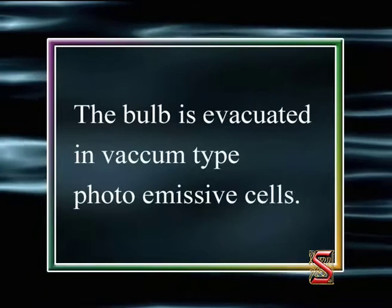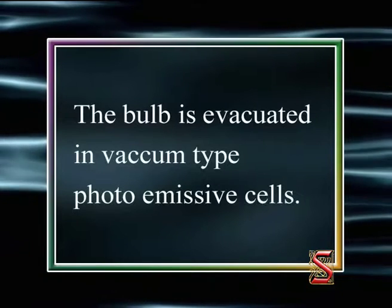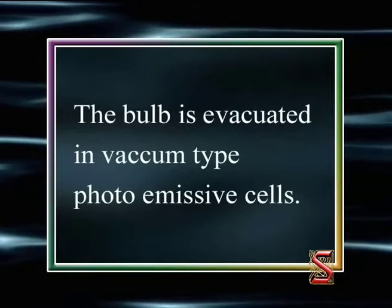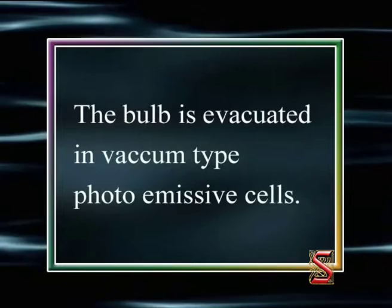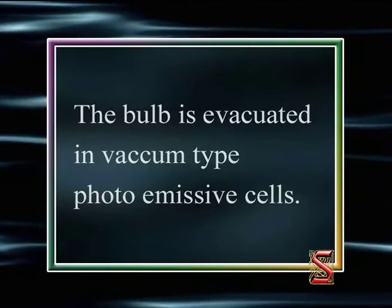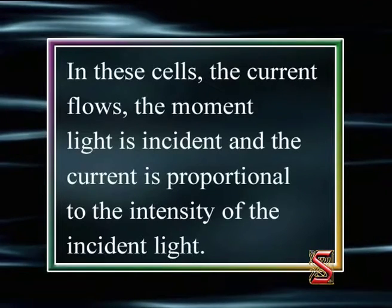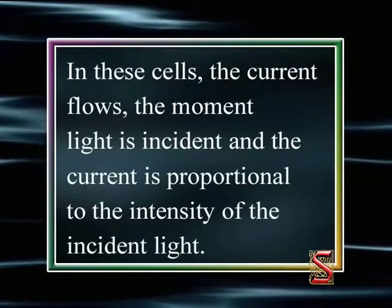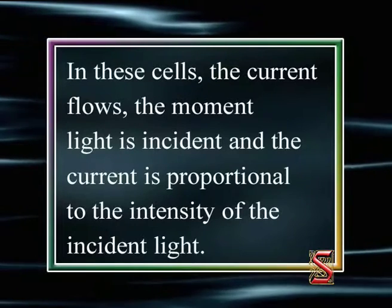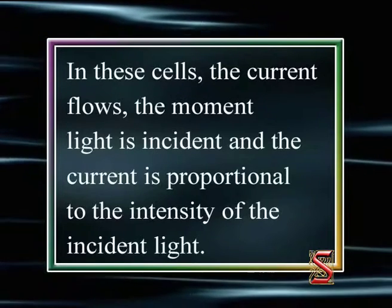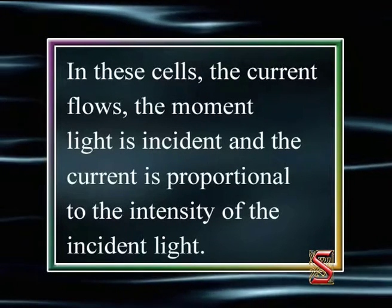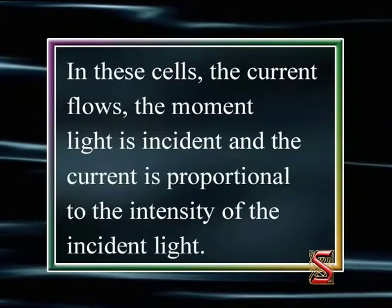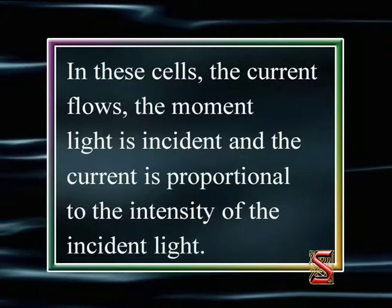The bulb is evacuated in vacuum type photoemissive cells. In these cells, the current flows the moment light is incident, and the current is proportional to the intensity of the incident light.